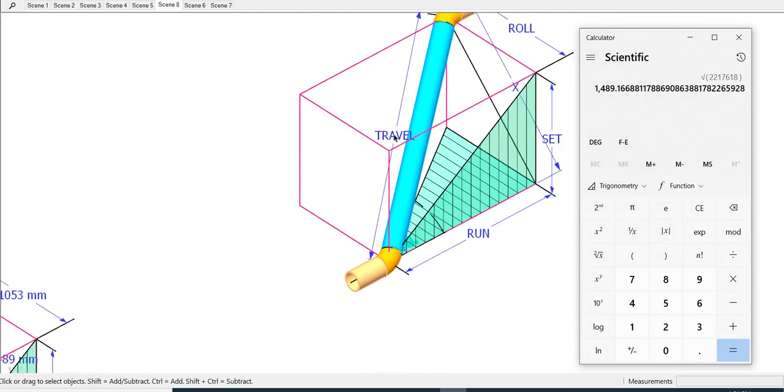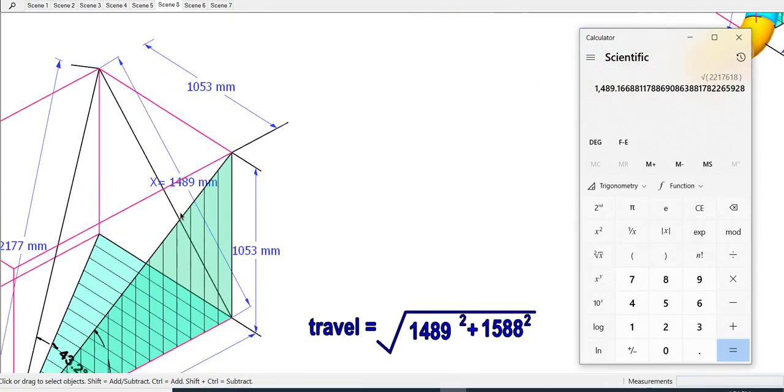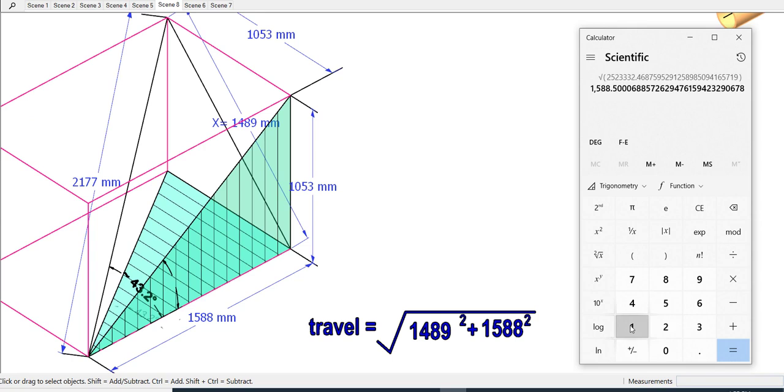Now calculate the value of the travel. The method is almost the same. Travel equals the root of the sum of the square roots of X and the run.